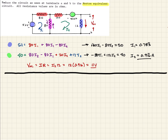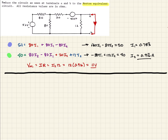Now we need to find our short circuit current. We reset and clean up the circuit. What that means is we take a wire and short across the two terminals A and B to get some current flow — that's our I short circuit. When we do that, we short out the 12 ohm resistor, so we remove it from the circuit. We then define mesh currents again: this loop will be ISC, and the other will be I0.